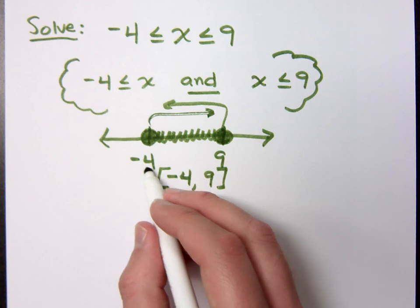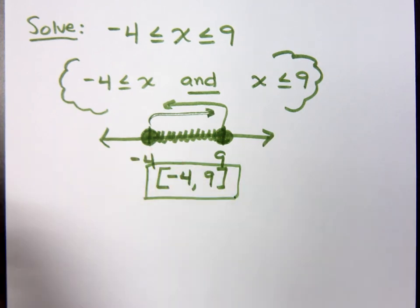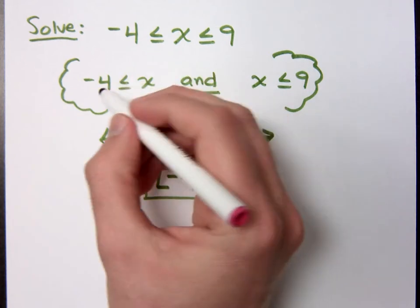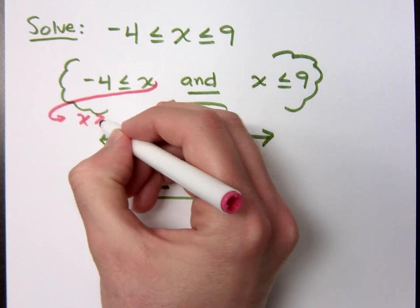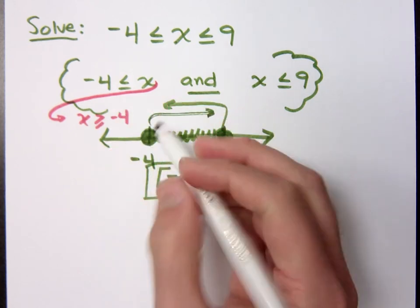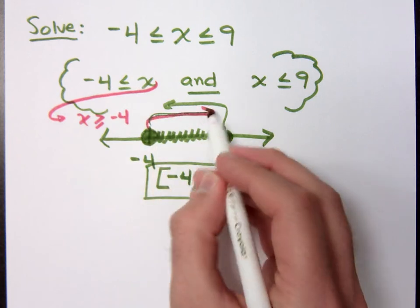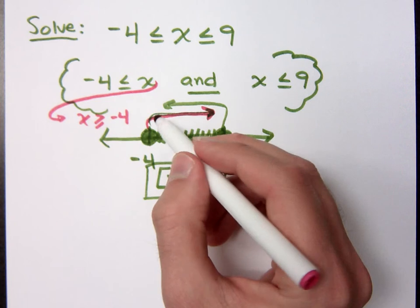Wouldn't negative 4 less than or equal to x let's go the other way? When you look at this and you were to rewrite it, that means x is greater than or equal to negative 4. So that's why it's greater than going out to the right. This guy's less than going to the left.